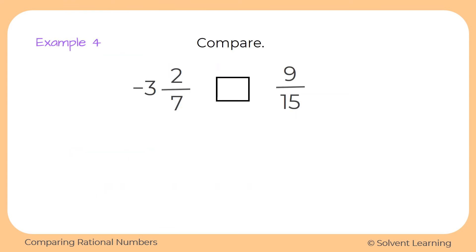We'll use that concept to compare negative three and two-sevenths versus nine-fifteenths. Looking at the numbers, we have a negative mixed fraction and a positive proper fraction with different denominators — quite a bit of work to align them. But we can simply check the signs: the left number is negative, the right is positive. Since all negative numbers are less than all positive numbers, negative three and two-sevenths is less than nine-fifteenths.